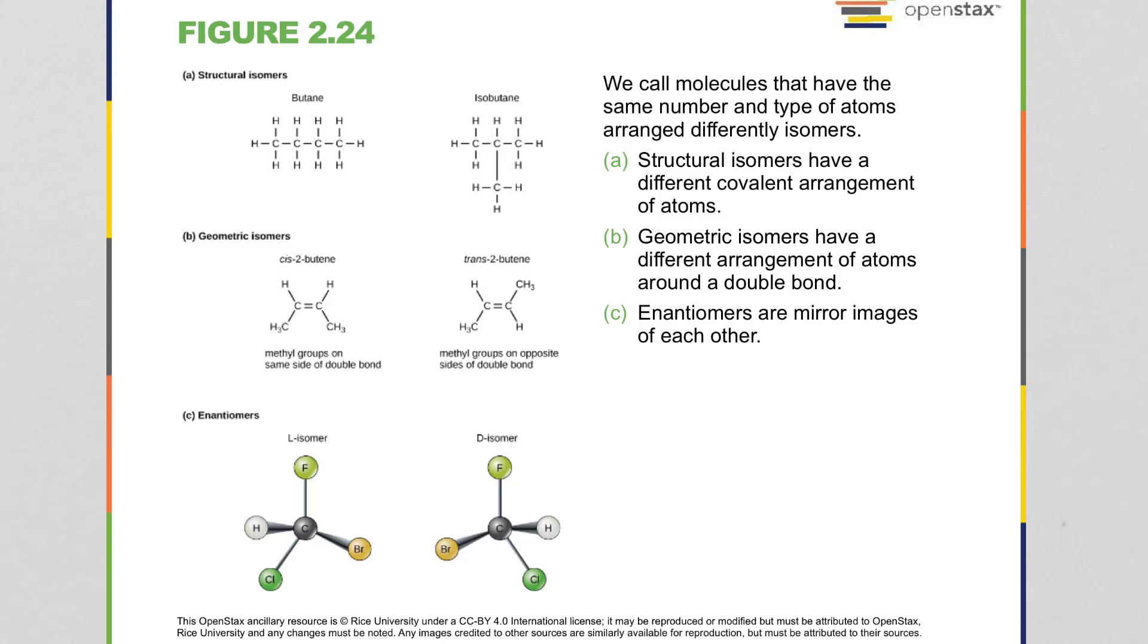In this video, we're going to talk about a concept in chemistry that revolves around how molecules can have the same chemical formula but have different structures. When that happens, we call those molecules isomers.